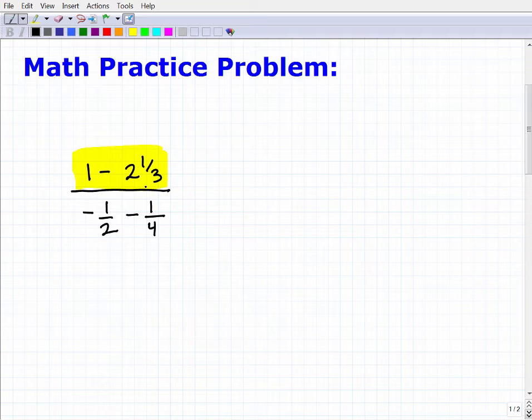So let's take a look at this. 1 minus 2 and 1 thirds. Right before we do anything, I want to ask you, is this going to be a positive or negative number? Hopefully you said negative. Look at the situation. This is one of the key things that you can do to help yourself out. Get the signs correct. If you had 1 minus 2, forget the 1 third part, you know this is going to be negative 1. So you know your answer is going to be negative.